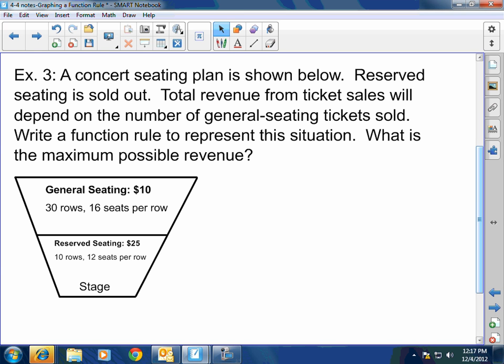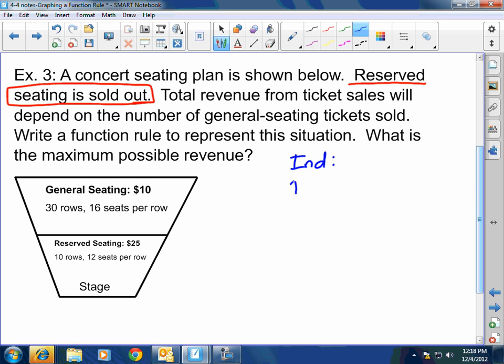Now, okay. The reserve seating, they say here, is sold out. Okay. They sold it out. Total revenue from ticket sales will depend on the number of general seating tickets sold. Write a function rule to represent the situation. Like always, my brothers, what is the independent and what is the dependent?